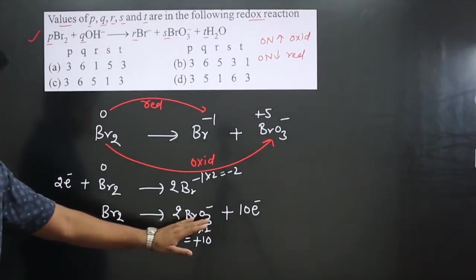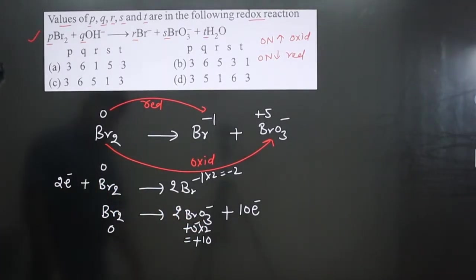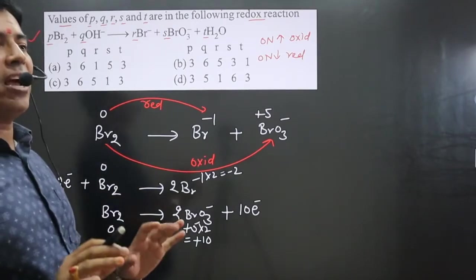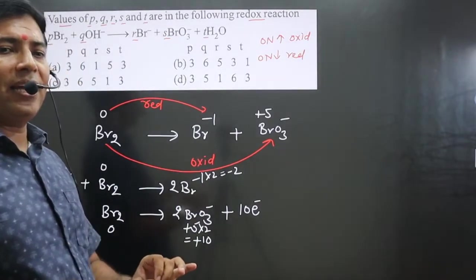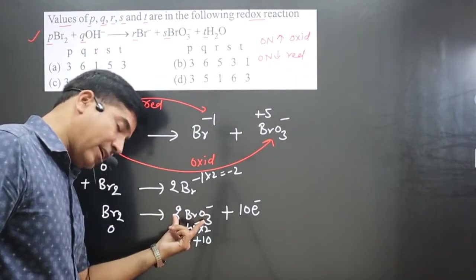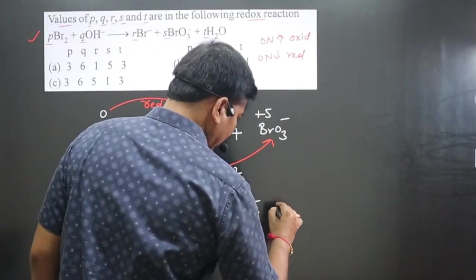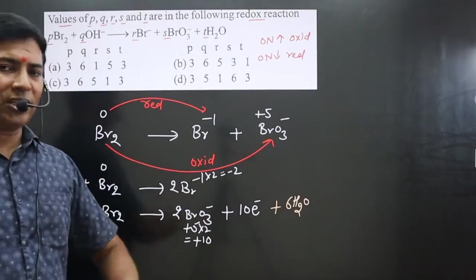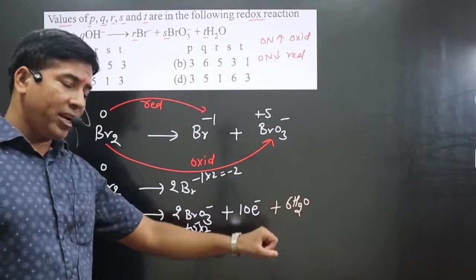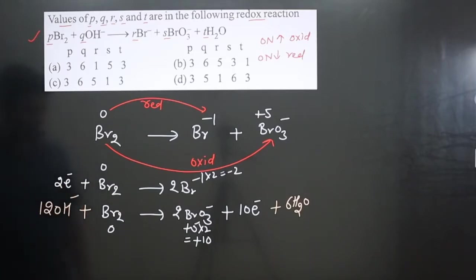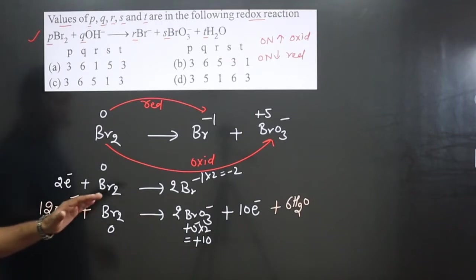In the second half-equation, we have oxygen to balance. With 2 BrO₃⁻ there are 6 oxygen atoms. Since we are balancing in basic medium, on the same side where we have more oxygen, we attach that many water molecules — so we attach 6 H₂O on the right side. That gives 12 hydrogens, so on the other side we attach 12 OH⁻ ions on the left. Hydrogen and oxygen are now balanced, and we have hydroxide ions confirming basic medium.